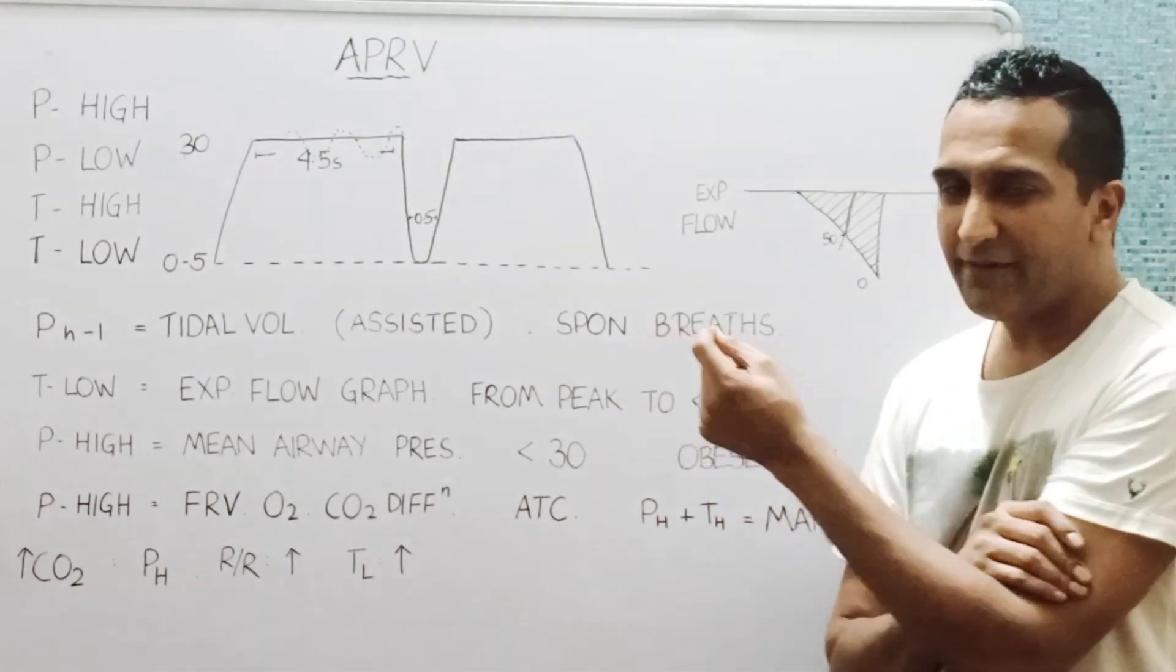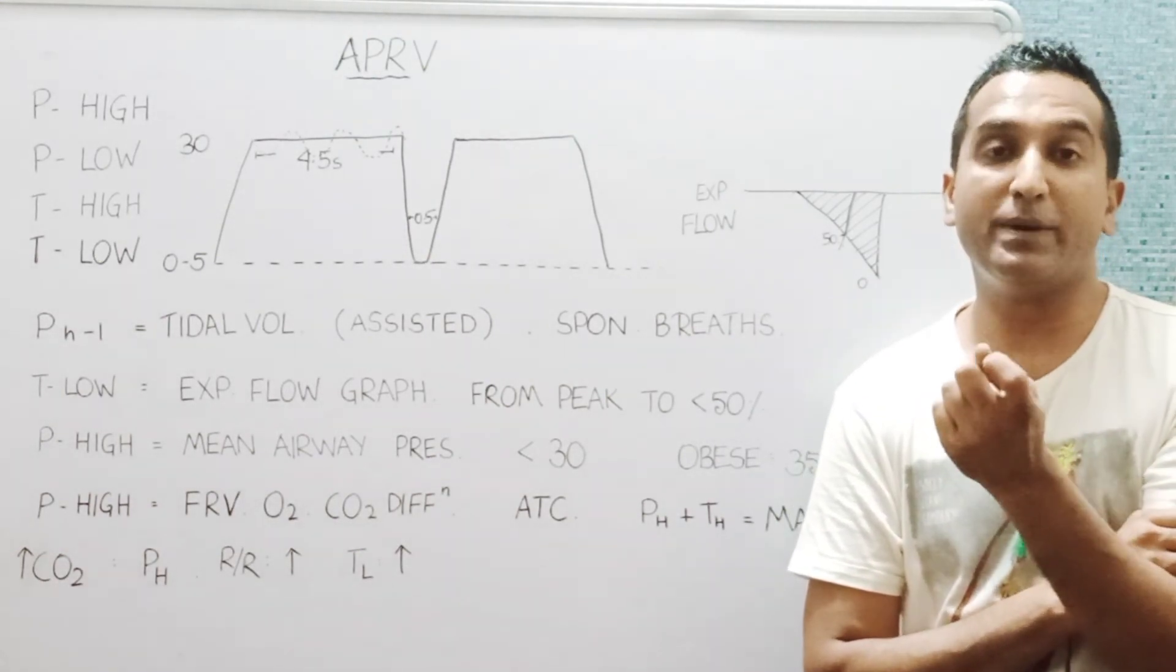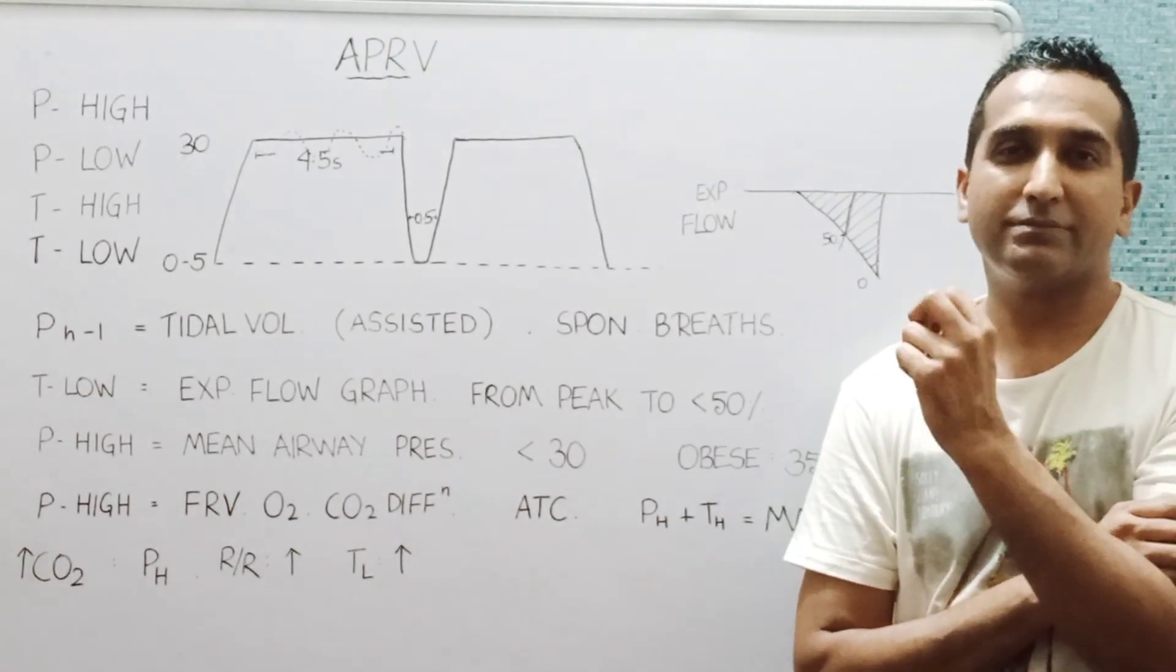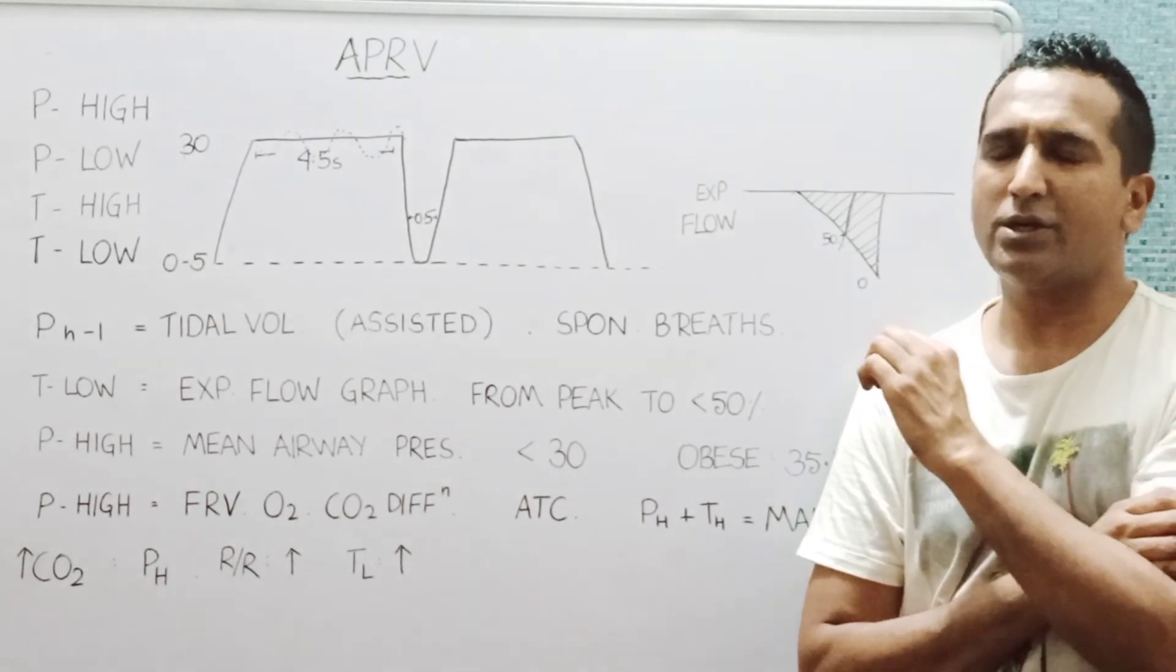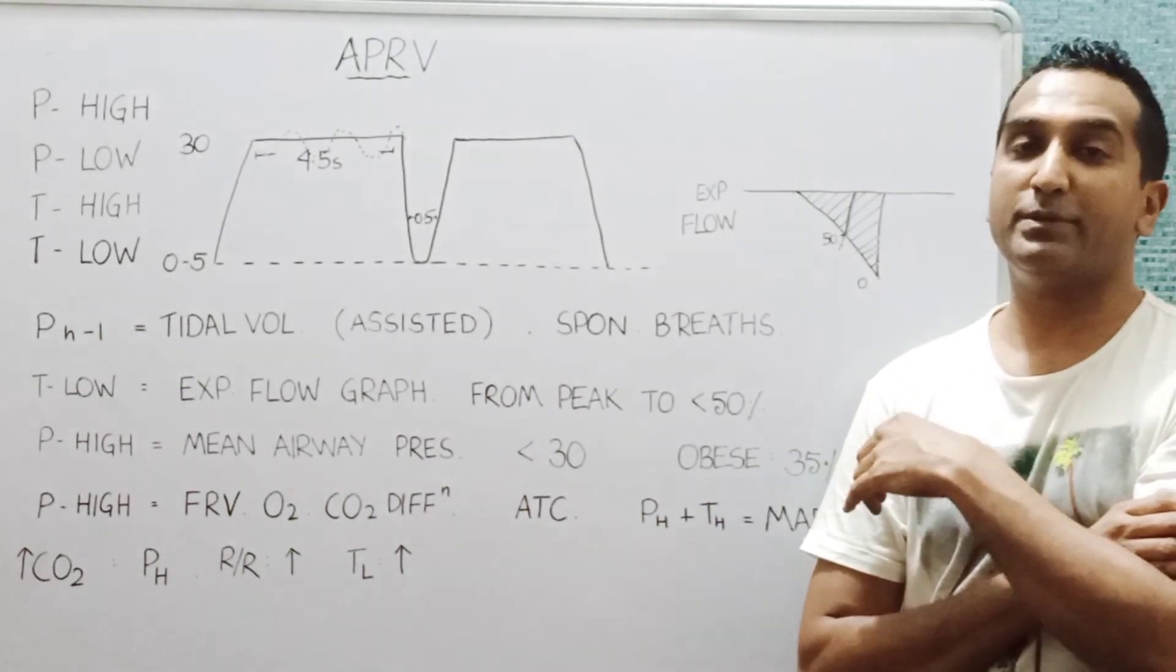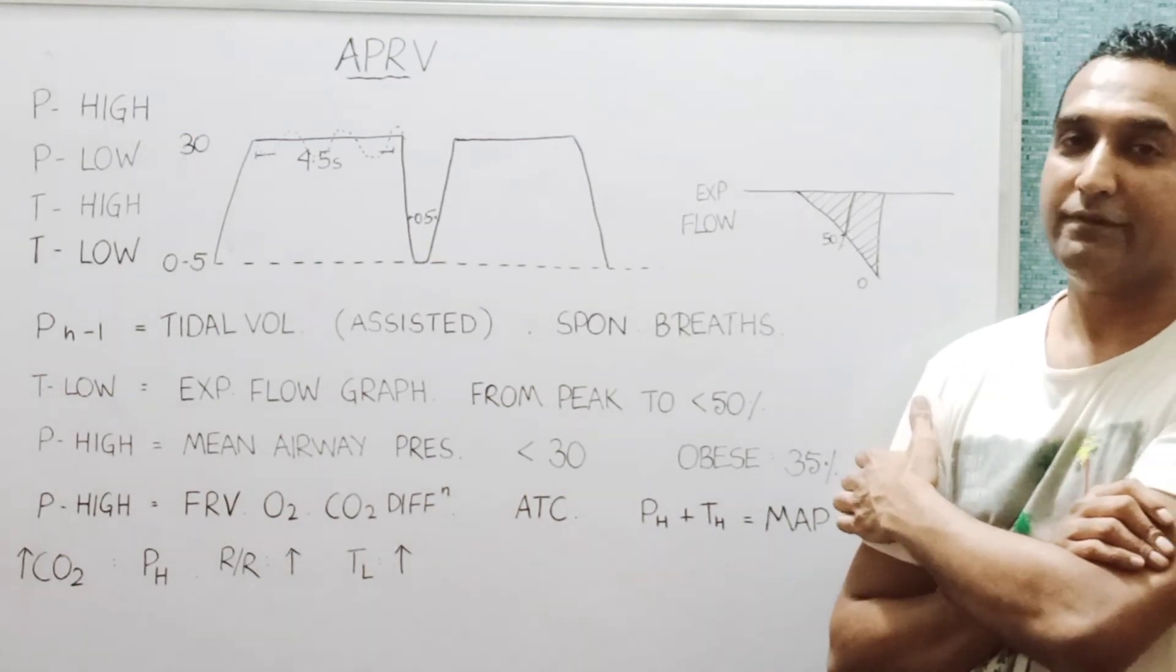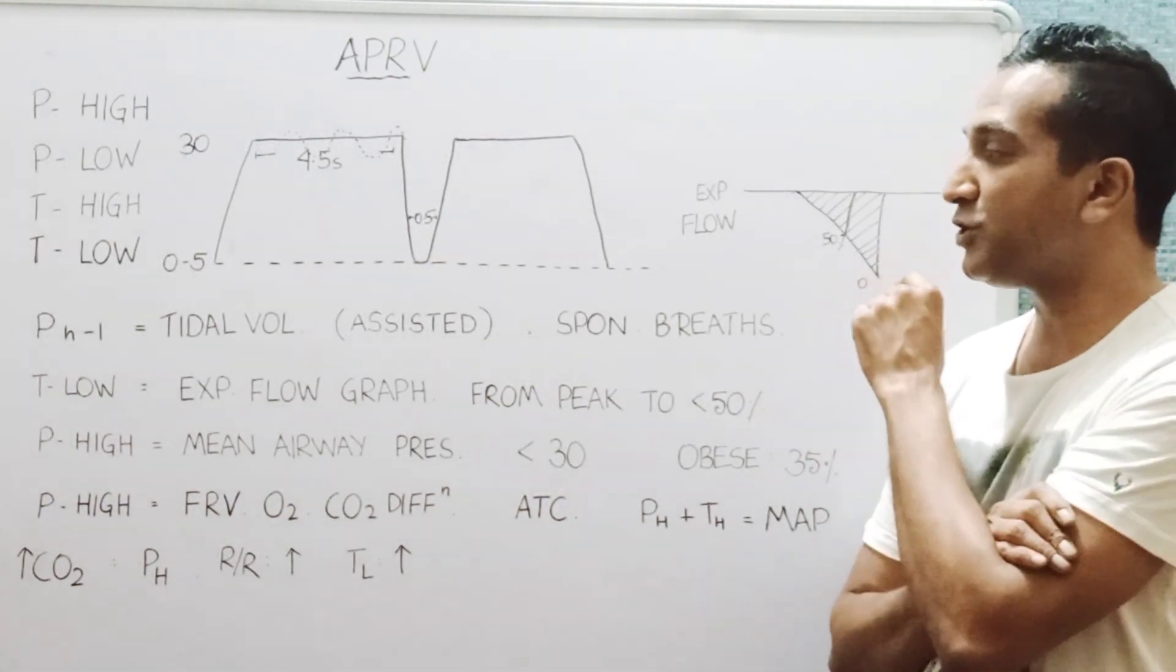The T low may have to be manipulated sometimes to a higher level when we are not able to manage the carbon dioxide. But even for those values, the T low should not come down at least below 25 percent of the peak flow, but generally keep it at 50 percent and above as a point where the new breath should start.